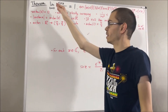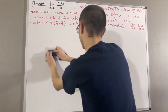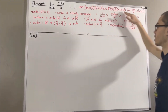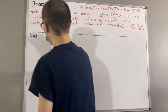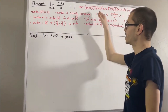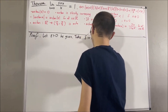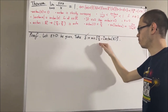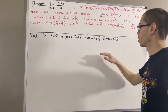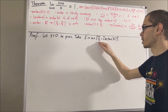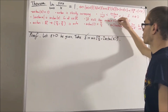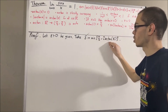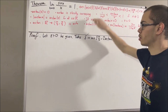Now let's get into proving this limit from the definition. Let's give ourselves an arbitrary epsilon > 0. We are going to take delta to be the smaller of pi/2 and 2·arctangent(epsilon). Pi/2 is positive, and since epsilon is positive, arctangent(epsilon) is positive. So delta is the smaller of two positive numbers — certainly delta > 0. This is a valid choice for delta.